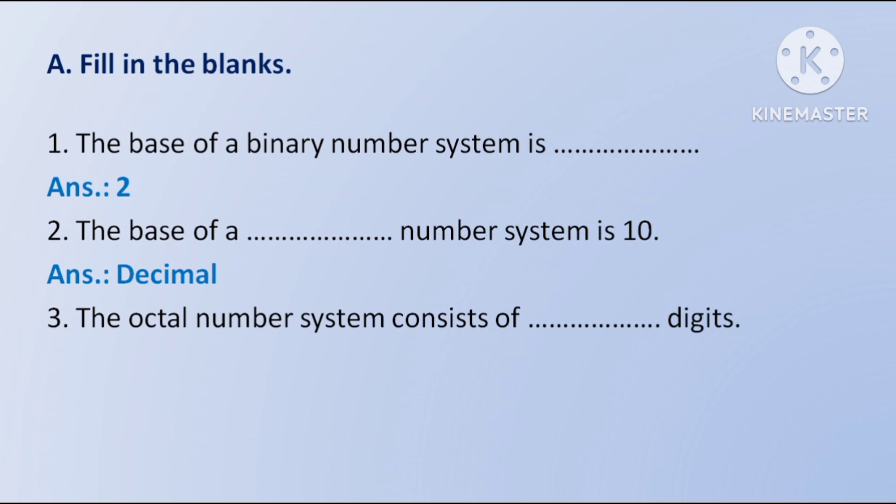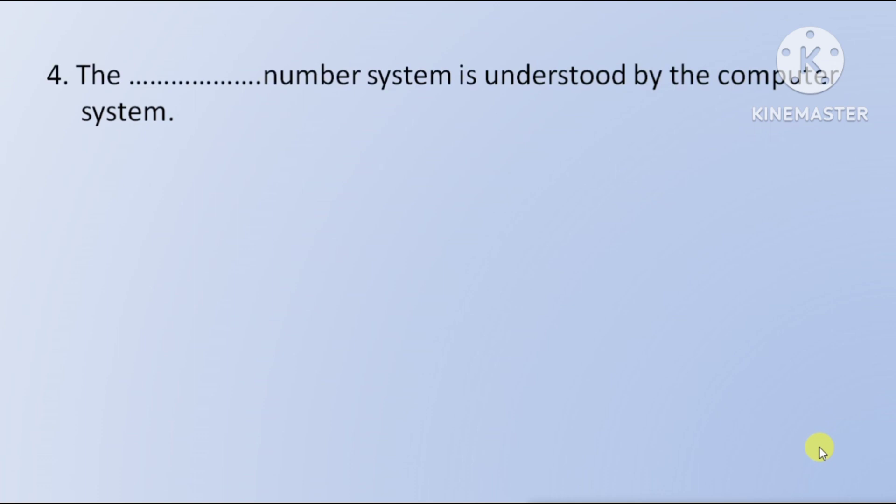Next question: the octal number system consists of how many digits — means octal number system mein kitne digits hote hain. The answer is eight.